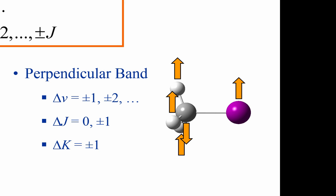However, you can imagine that a perpendicular vibration for the methyl iodide might look something like this. For a perpendicular band for a non-linear molecule, delta v is equal to plus or minus 1, or plus or minus 2, etc. And delta J is equal to 0, or plus or minus 1. But this time, delta K is not equal to 0. It is only equal to plus or minus 1.